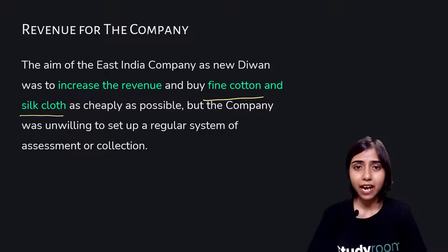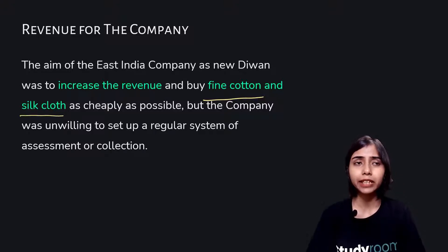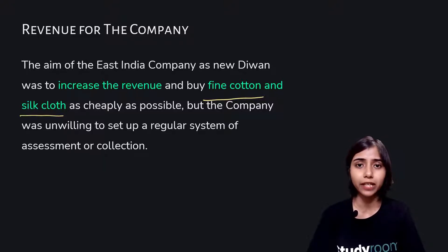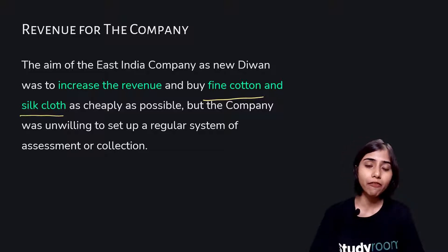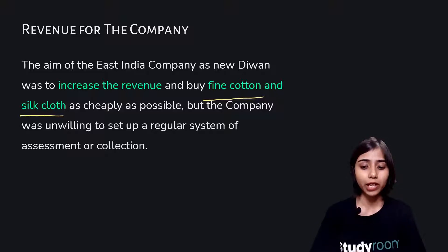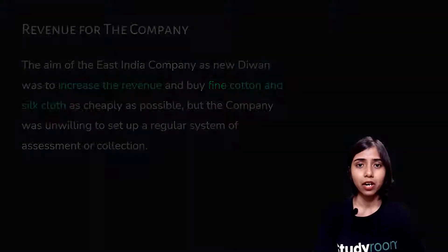As we learned in the previous chapter, before this Diwani the company needed to import gold and silver to buy raw materials — silk and cotton textiles from India. But now, since they had the Diwani, the revenue was enough for them to buy these goods directly. So they wanted more and more revenue to buy more products, send them back to England, and gain greater profits.